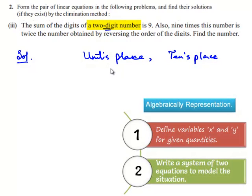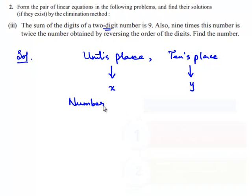Let the unit's place digit be x and 10's place digit be y. Now, the number would become 10y plus x. Number is equal to 10y plus x.